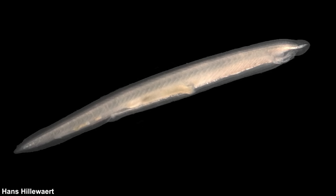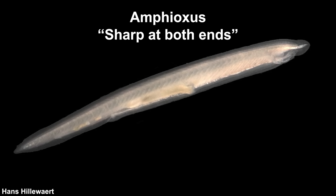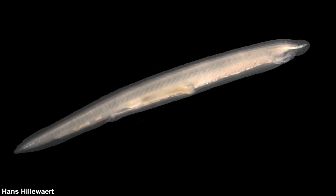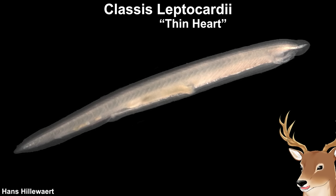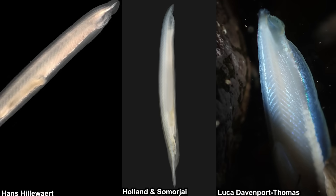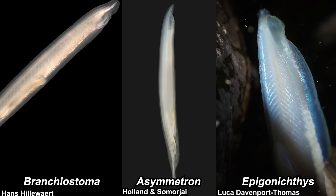Lancelets are called lancelets because they kind of look like a small lance. They are also known as amphioxus, which means 'sharp at both ends,' also because of their shape. As far as I know, there is only one class of extant lancelets, which is Leptocardii. Leptocardii means 'thin heart,' which is not exactly true — I'll talk about this later. There are three genera of extant lancelets: Branchiostoma, Asymmetron, and Epigonichthys.